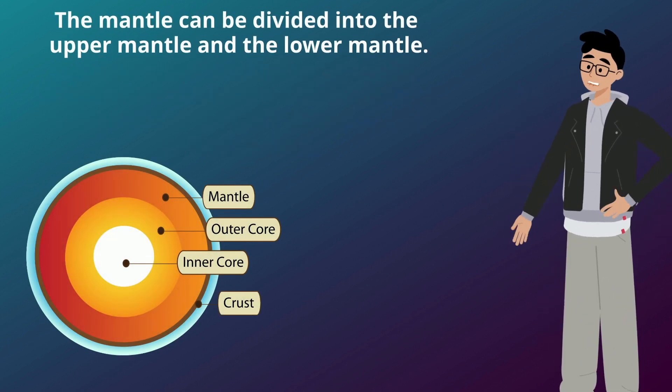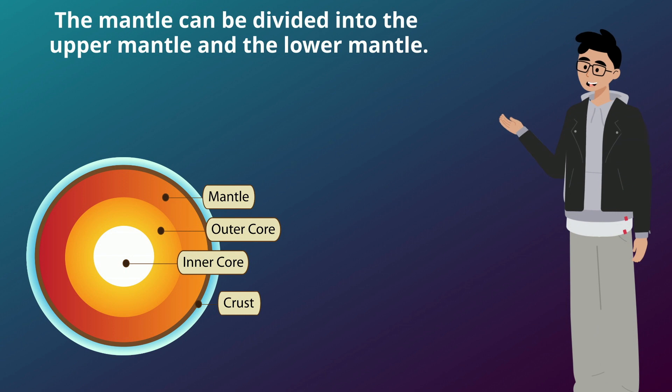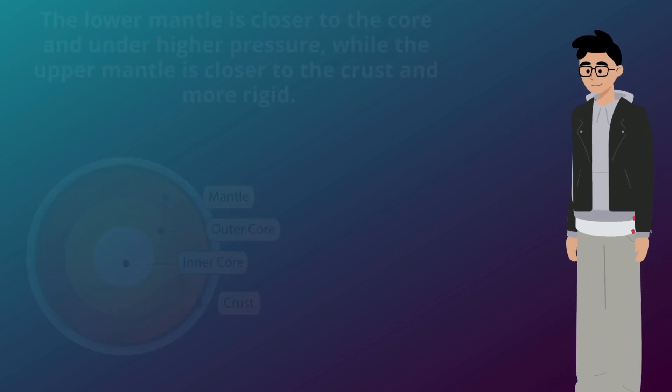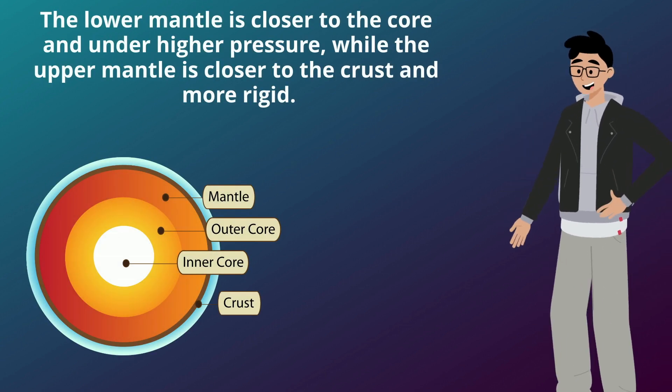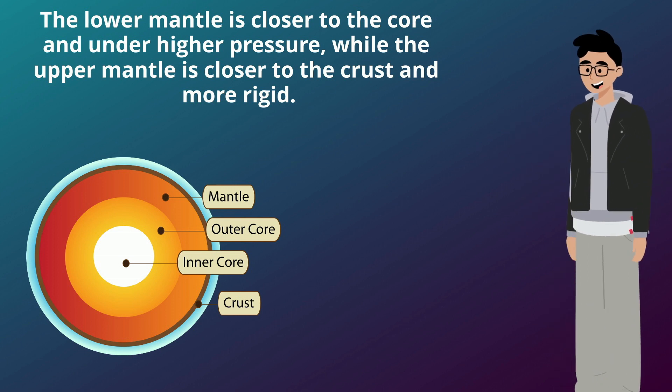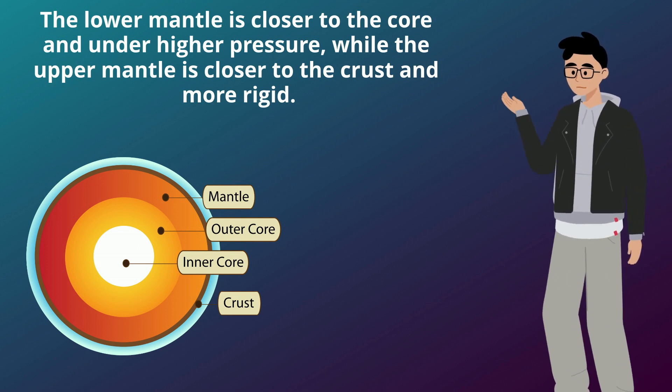The mantle can be divided into the upper mantle and the lower mantle. The lower mantle is closer to the core and under higher pressure, while the upper mantle is closer to the crust and more rigid.